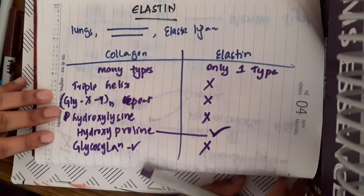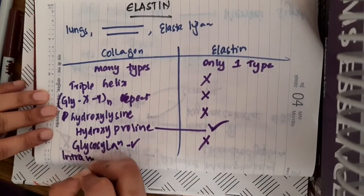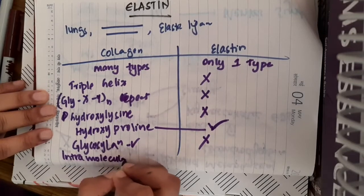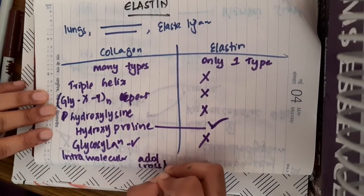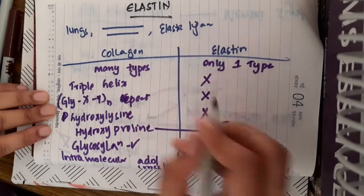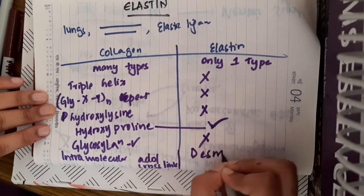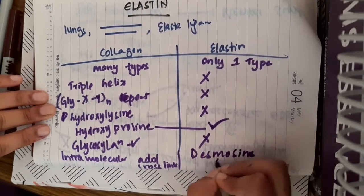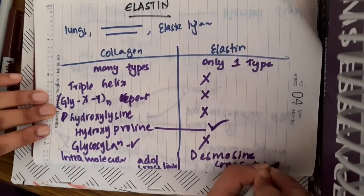In collagen, you see intramolecular aldol cross linkage occurs. Whereas in elastin, you see desmosine cross linkage occurs.